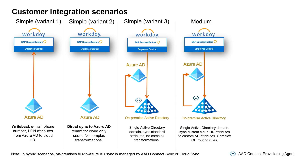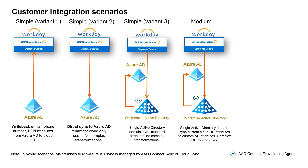The fourth integration scenario is a medium complexity flavor involving a single AD domain or forest. Your integration may resemble this scenario if you want to pull custom HR attributes and add OU routing logic. For example, creating a user in a specific AD container based on the HR department value. And the fifth integration scenario is the high complexity flavor involving multiple AD domains or forests. Your integration may resemble this scenario if your AD domains are segmented by region, business unit, or subsidiaries, and you have a delegated administration model.